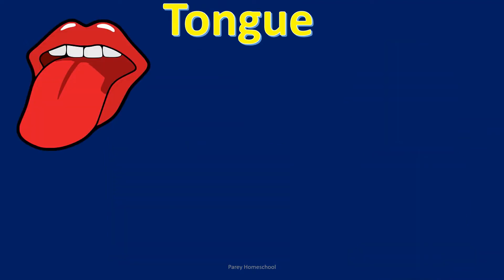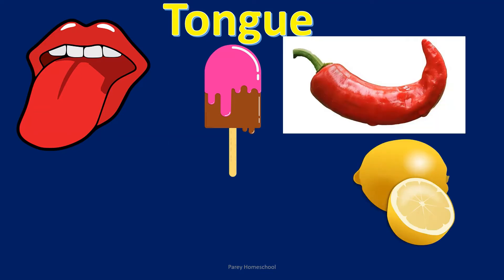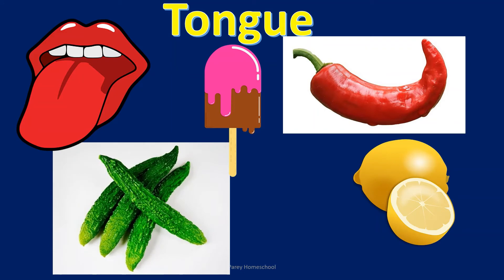Tongue. We use our tongue to taste. It helps us to know the different tastes like sweet, spicy, sour, bitter and salty. These are the different types of food which we eat and enjoy with the help of our tongue.